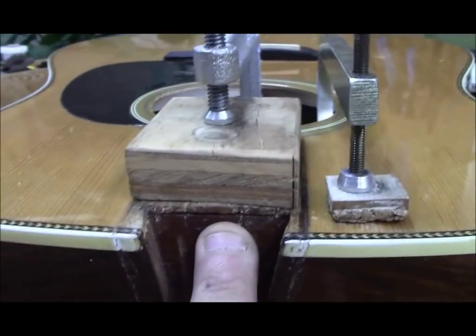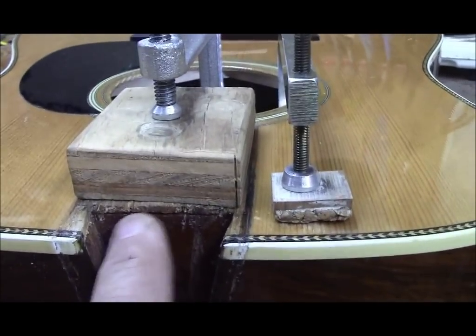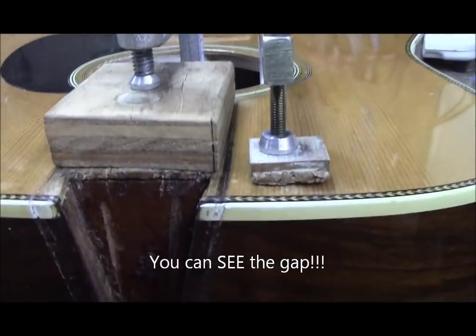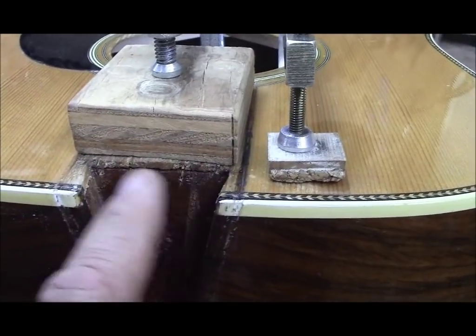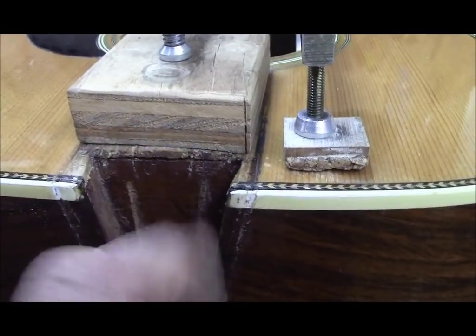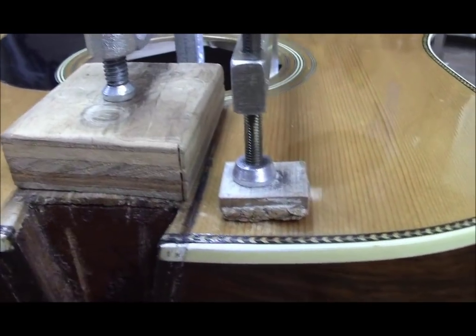Let me get down here where you can see a little bit better. You got to check where the top meets the neck block and that will maybe 30% of the time, 25% of the time this would be loose. Put some glue in there, clamp it just like that.